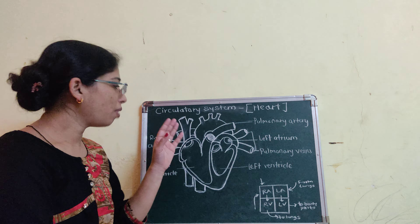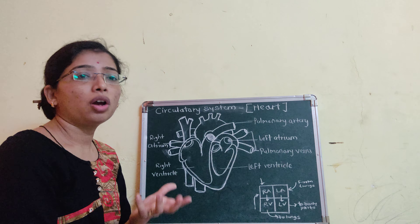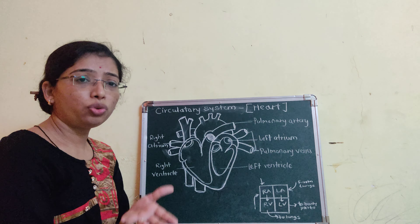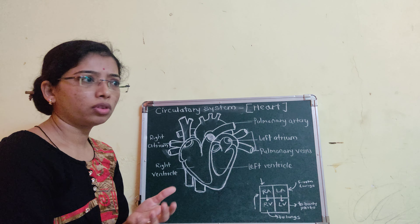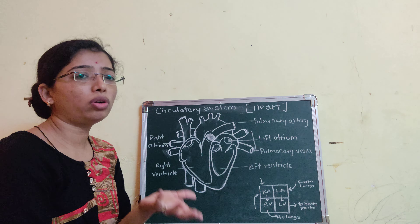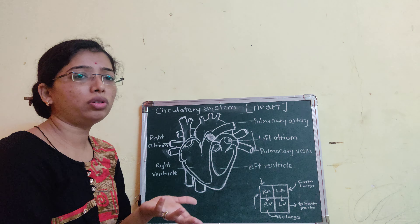The primary parts of the circulatory system are the heart, then arteries and veins. We are going to study about the most important part of the circulatory system, that is the heart.